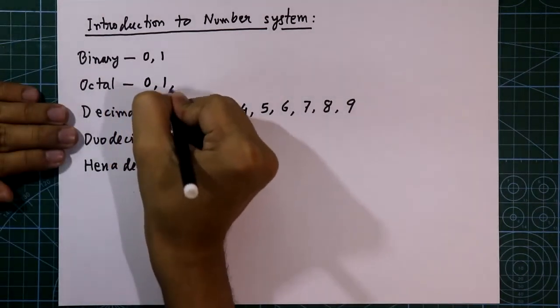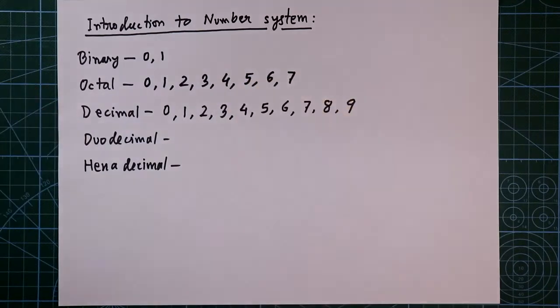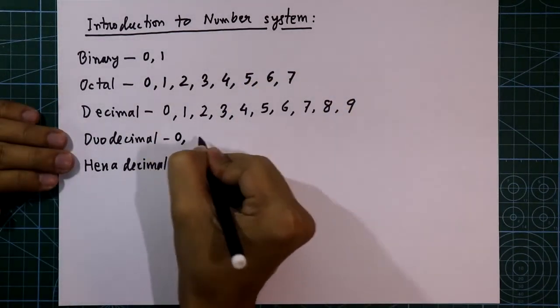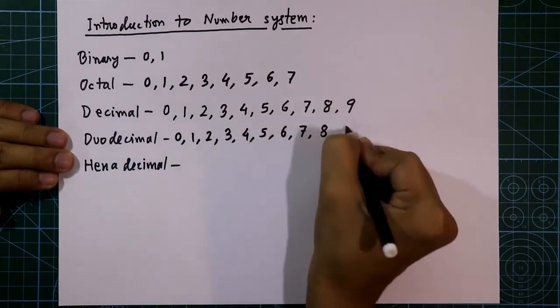In octal number system, it is from 0 to 7. The base is 8. In duodecimal number system, it has 0 to 9.